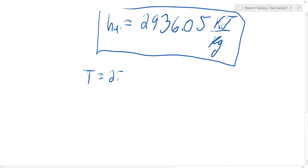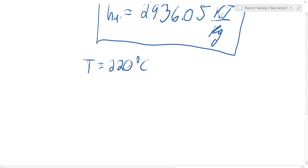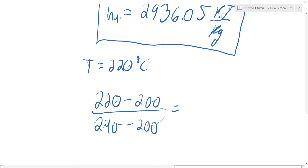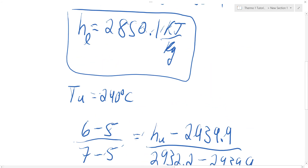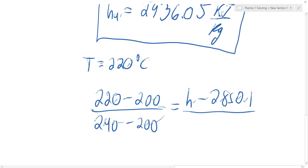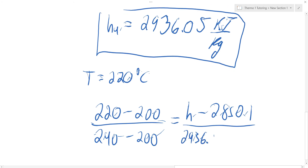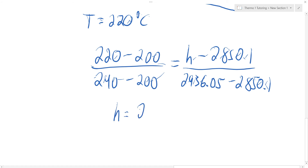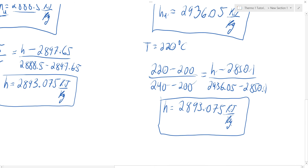Now interpolating to get properties at 220 degrees Celsius: (220 minus 200) over (240 minus 200) equals (H minus 2,850.1) over (2,936.05 minus 2,850.1). Solving for H gives 2,893.075 kilojoules per kilogram — the same answer as before. It doesn't matter which route you take; you should end up with the same answer.